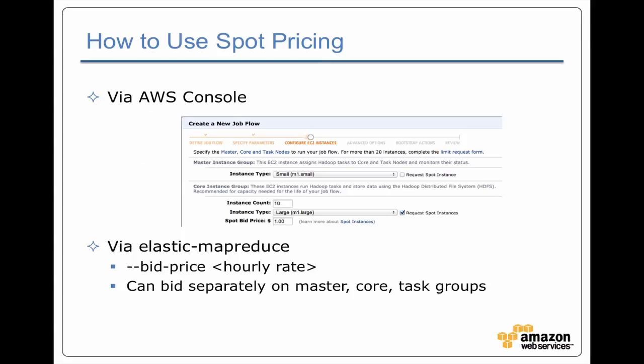Let's talk about how you actually set up spot pricing. When you're configuring your job flow, you can specify spot pricing for the master (though typically you wouldn't), for the core servers — the ones that have both storage and processing, meaning they're running both a data node and a task tracker daemon — or just for the task group. In this example, I'm requesting spot pricing for core instances: 10 instances of M1 large with spot pricing up to $1 an hour. Or if you're using the command line, you can specify --bid-price with the hourly rate.